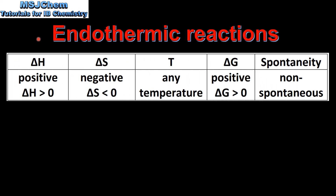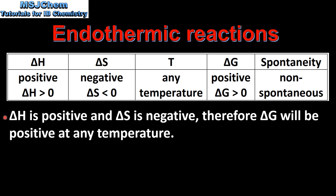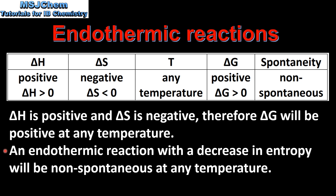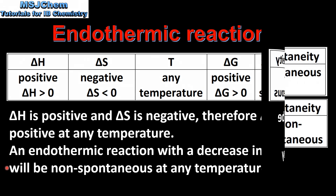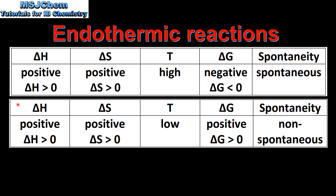Next we look at endothermic reactions. In our first example delta H is positive and delta S is negative, so we have an endothermic reaction with a decrease in entropy. At any temperature delta G will be positive and the reaction will be non-spontaneous. So when delta H is positive and delta S is negative, delta G will be positive at any temperature. An endothermic reaction with a decrease in entropy will be non-spontaneous at any temperature.